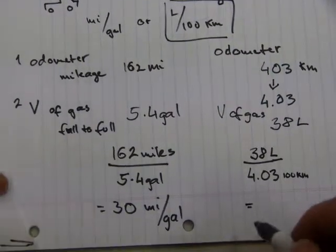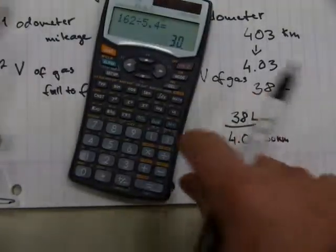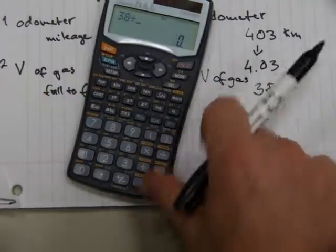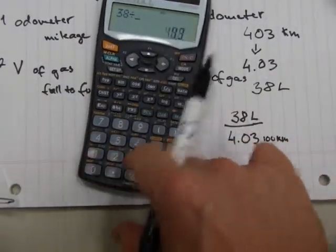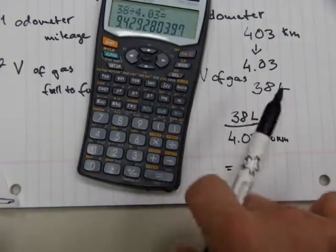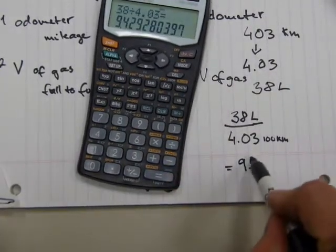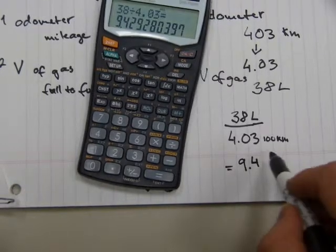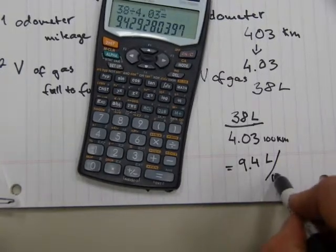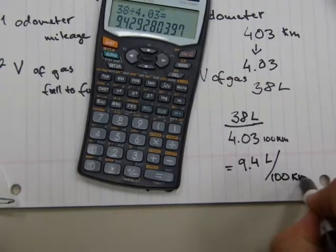When you do the division, you're going to get another number out of it. 38 divided by 4.03, and that equals to 9.4 liters over 100 kilometer.